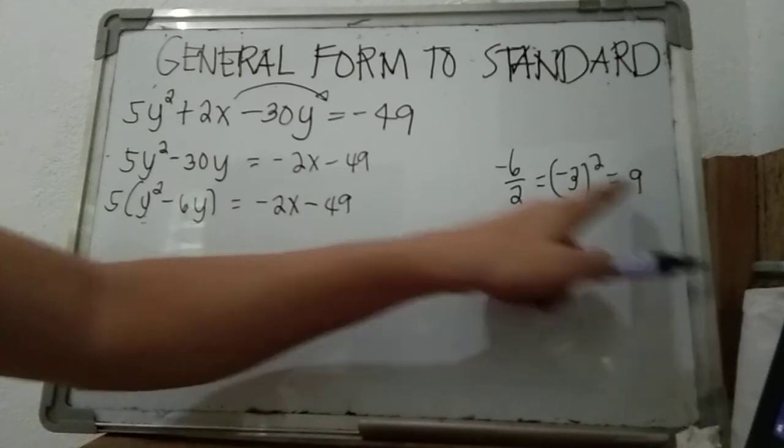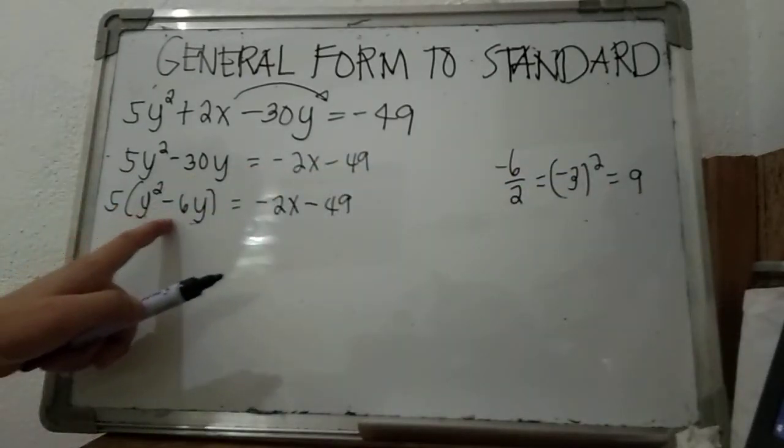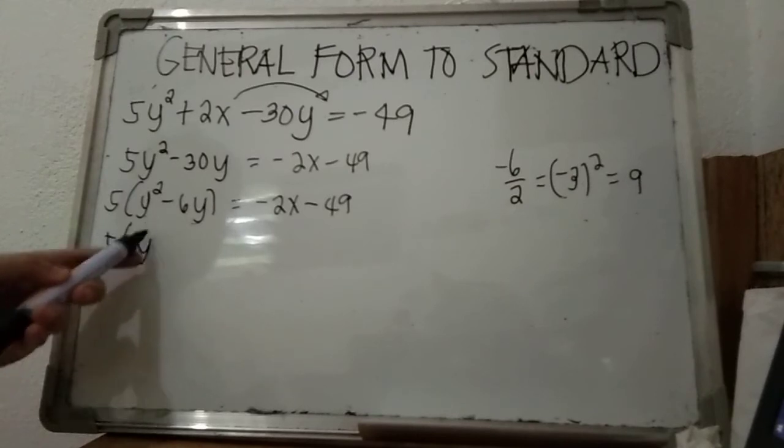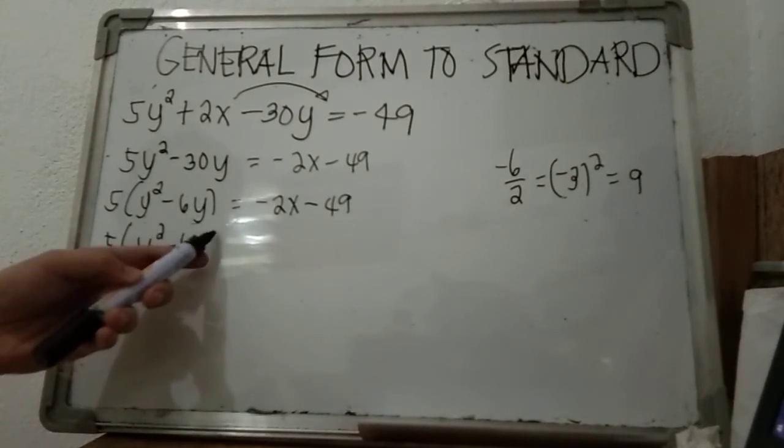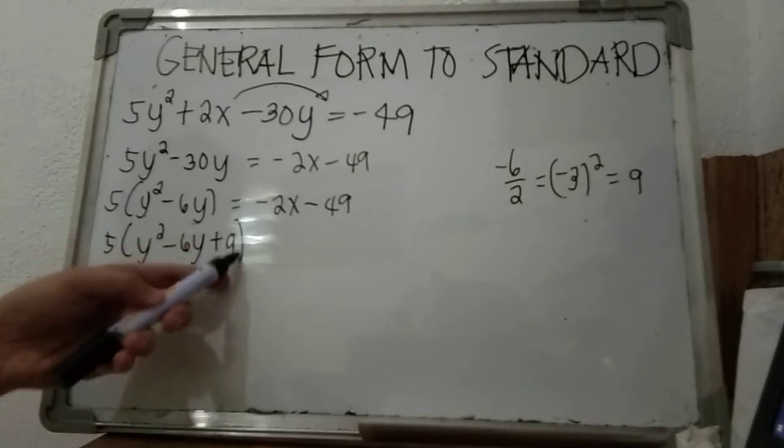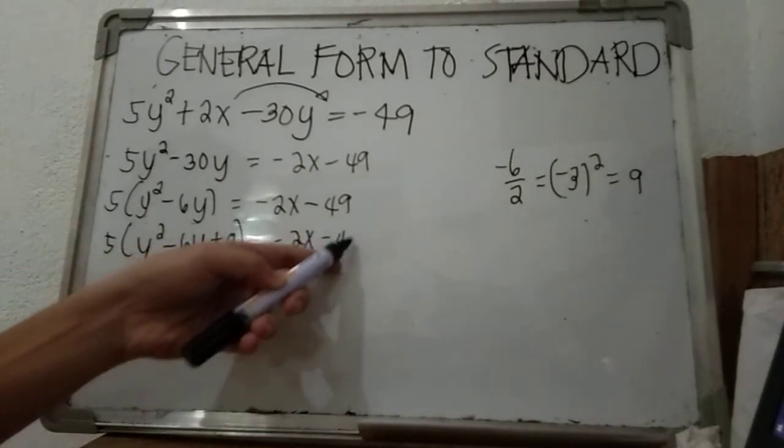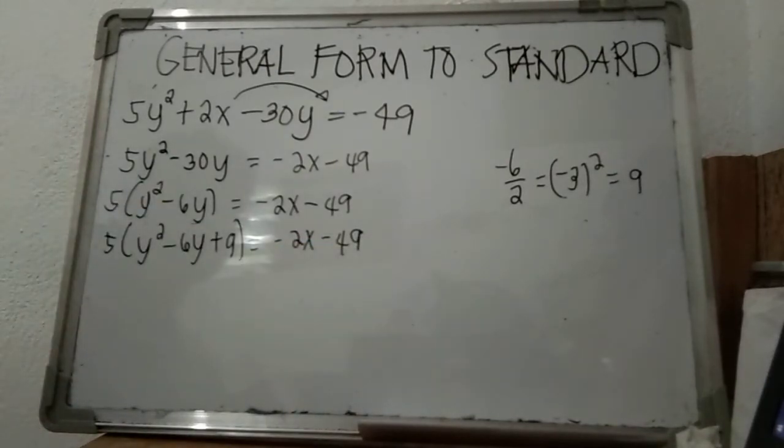So we have here 5 times (y² minus 6y plus 9) equals negative 2x minus 49.